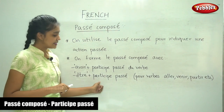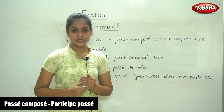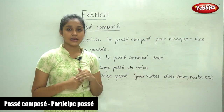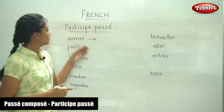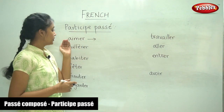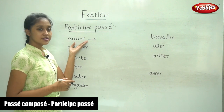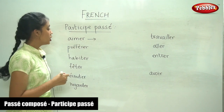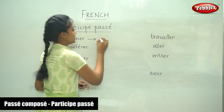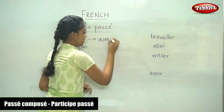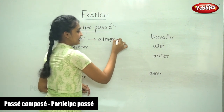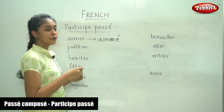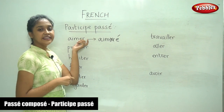Now I shall show you how to form the past participle of some common verbs. For ER verbs, the past participle is formed by removing -er and adding -é with an acute accent. This is how you form the past participle of an ER verb, and it is the same for all ER verbs.